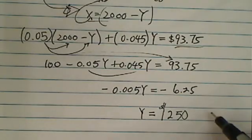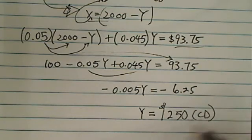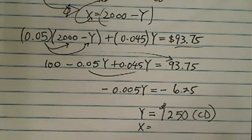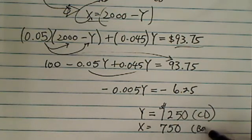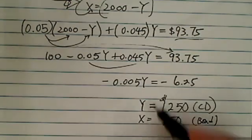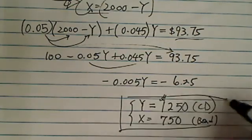Now, remember y was in the CD. Because CD, we have $1250, and altogether, we invested $2,000, so that means in my bond, I have $750. And each type is this much.